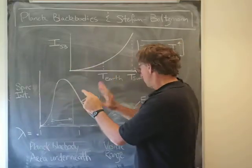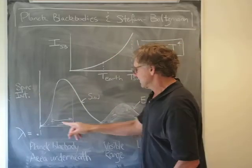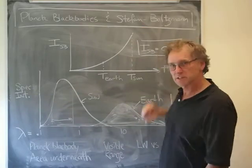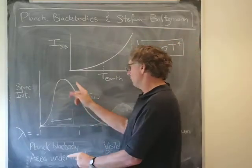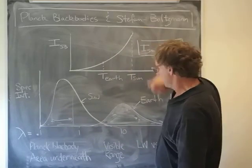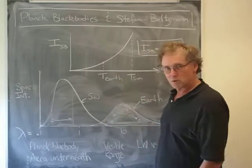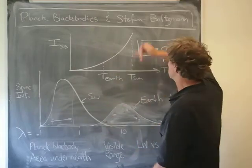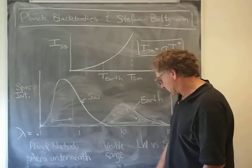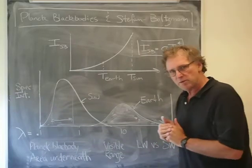It's the area underneath here that we plot under the Stefan-Boltzmann curve. You can see the area under the Sun's Planck blackbody curve is really high, and the area under the Earth's Planck blackbody curve is much lower. Again, that's quite exaggerated—this is much bigger than that. The remaining point I wanted to make is the distinction between longwave and shortwave.